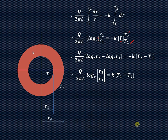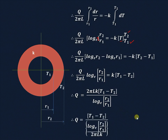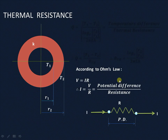Transferring the 2πLK term and log R2 by R1 to the other side, we get Q equal to 2πLK times (T1 minus T2) divided by log R2 by R1. We can write this in terms of temperature difference in the numerator divided by log R2 by R1, and the remaining term in the denominator. Now, according to Ohm's law,